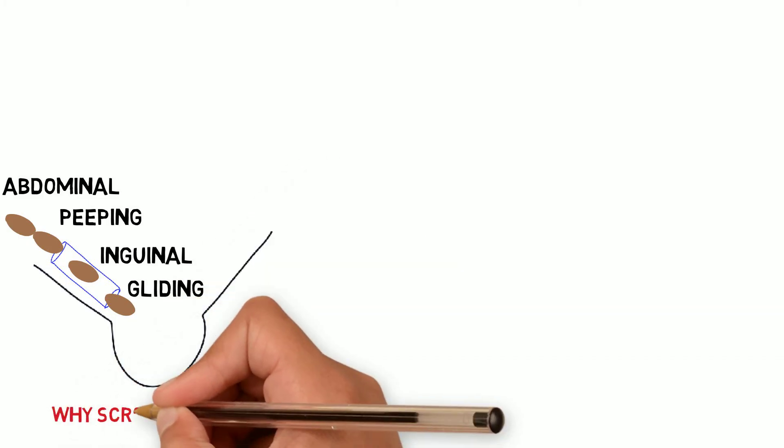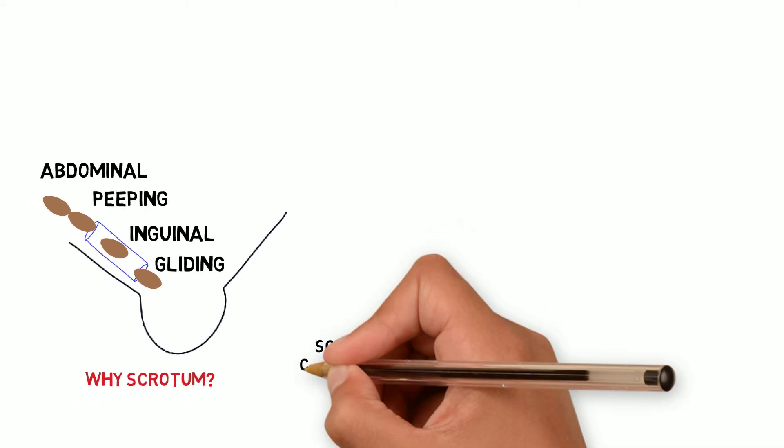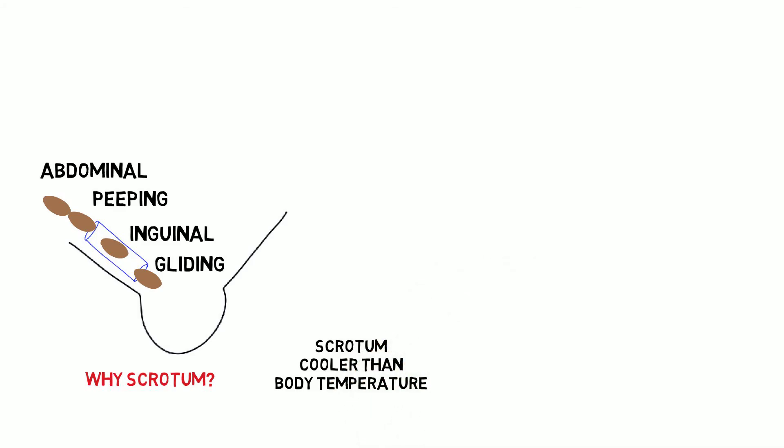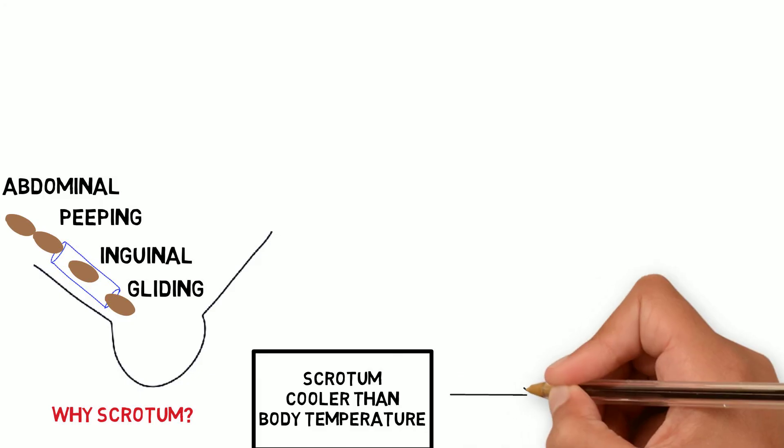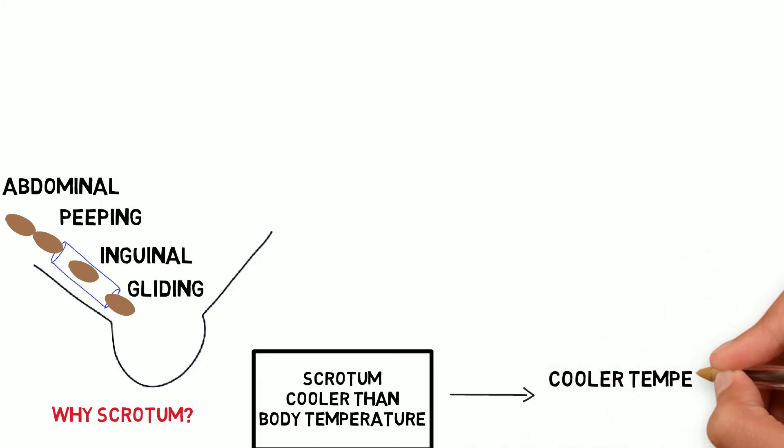Why should the testis descend into the scrotum? Because the scrotum is cooler than body temperature, and cooler temperature is needed for sperm synthesis.